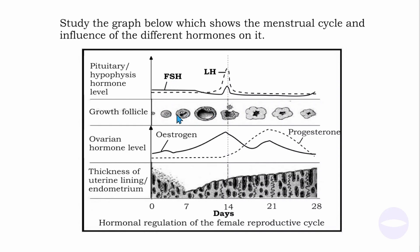From around day zero to day seven, the level of FSH is a little higher, causing the follicles to increase in size. Then the LH — the luteinizing hormone — increases very sharply, causing ovulation. After ovulation has taken place, LH drops and FSH also becomes very low in the blood.